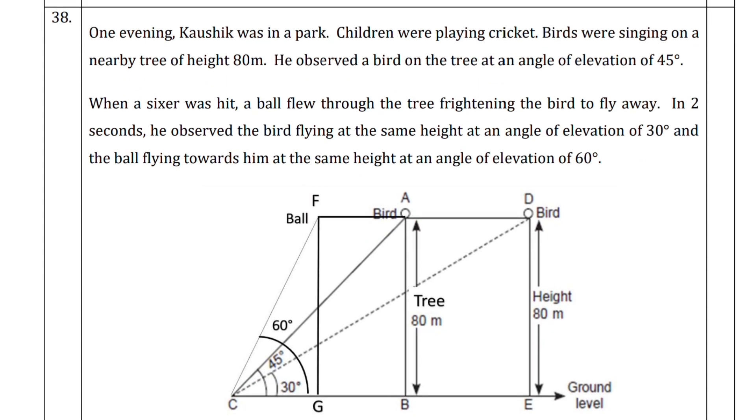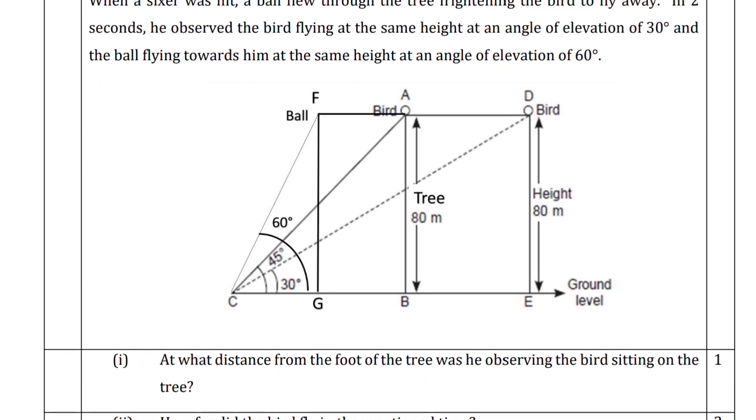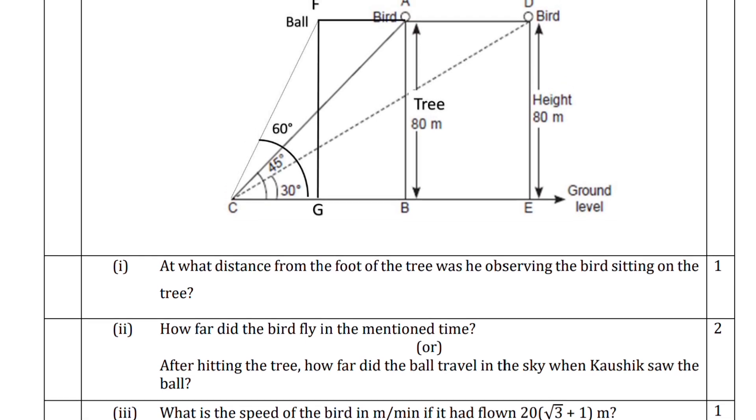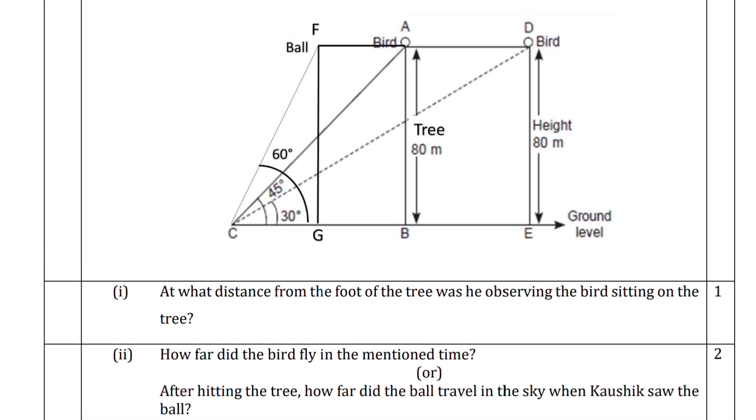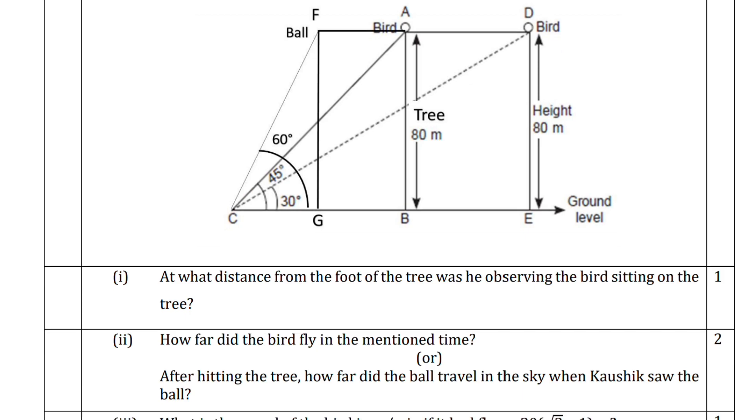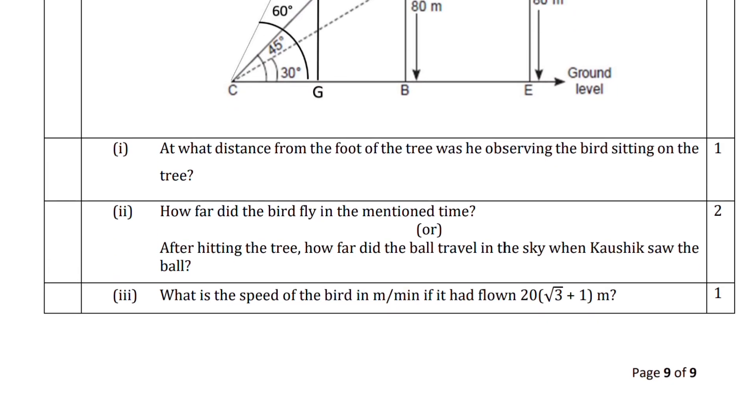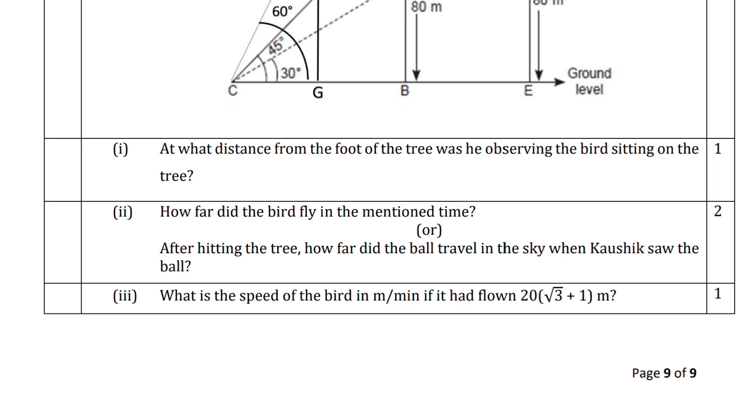Question 31 - evening Kaushik was in park. You can see this graph here with 30-45 degree angles. Three questions are given according to this. You have to give the answer to those. I hope you are clear about this. You have to answer according to that. You just have to manage both English and Hindi.